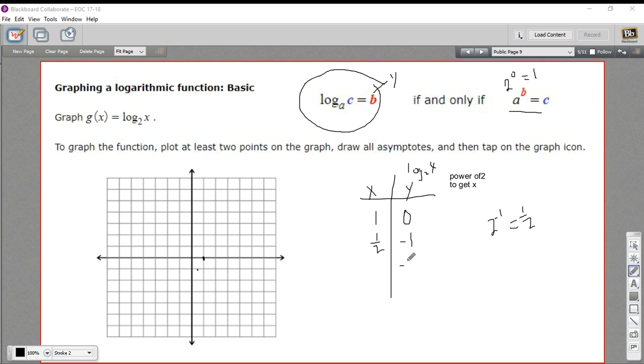What happens when the power is negative 2? 2 to the negative 2 is 1 over 2 squared, or 1/4. So we get negative 2 and 1/4.